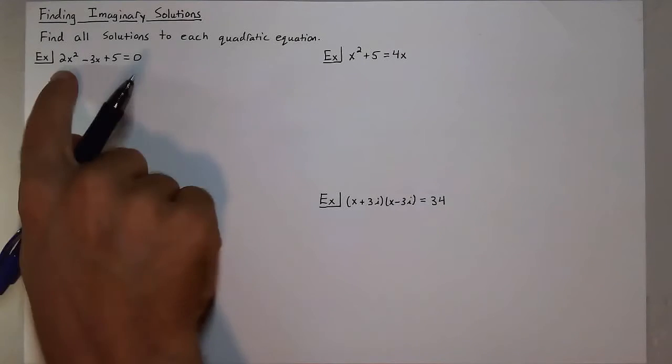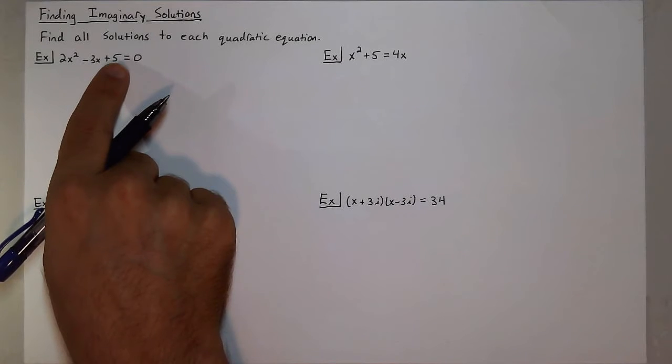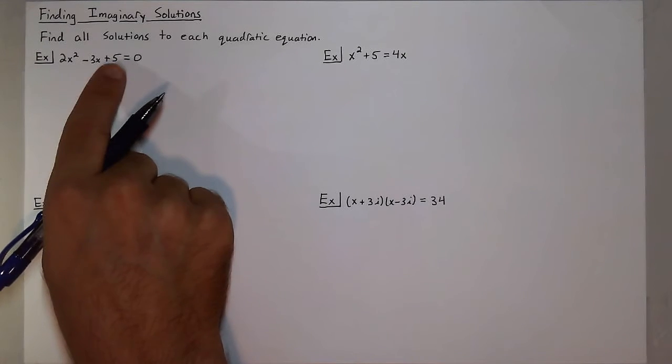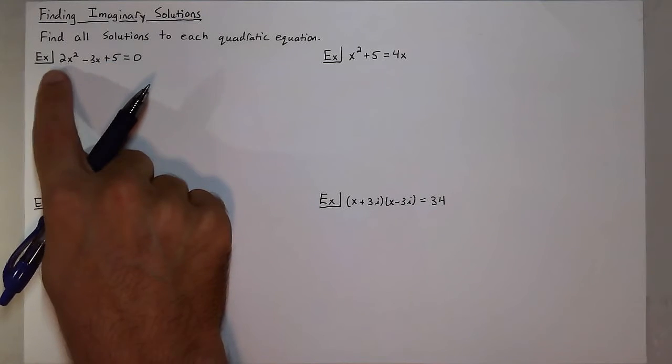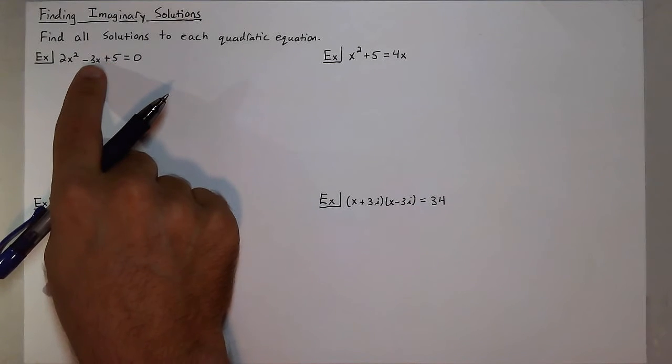So let's look at 2x² - 3x + 5 = 0. Now I can already tell right away that I will not be able to factor this because there are no two numbers that multiply to 10 and then add to negative 3.